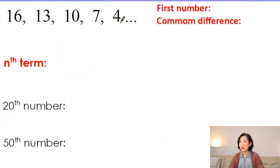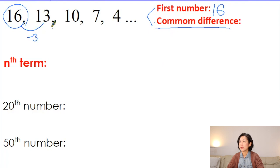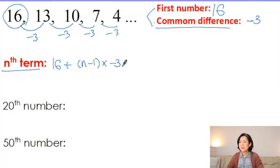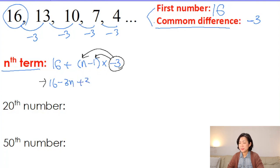Now let's move to the sequence that decreases by 3. Identify the first number: 16. It decreases by 3, so the common difference is minus 3. Using the formula: 16 plus (n minus 1) times minus 3. Be careful with the negative sign. Distributing minus 3: 16 minus 3n plus 3. So minus 3n plus 19 is our final formula.